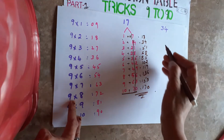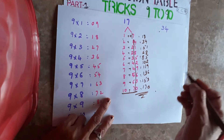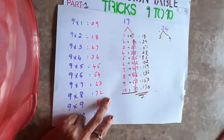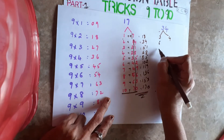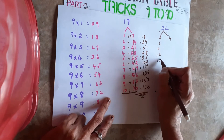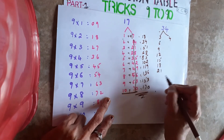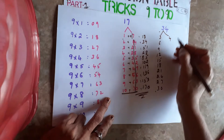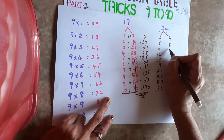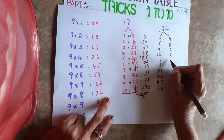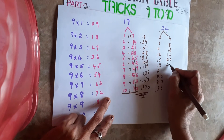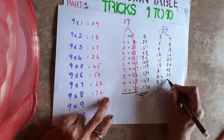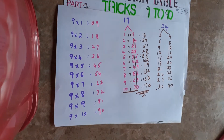One more example: suppose you want the 34th table. Split like this — 3 separate, 4 separate. The 3-table: 3, 6, 9, 12, 15, 18, 21, 24, 27, 30. Then the 4-table: 4, 8, 12, 16, 20, 24, 28, 32, 36, 40.